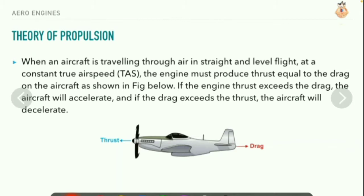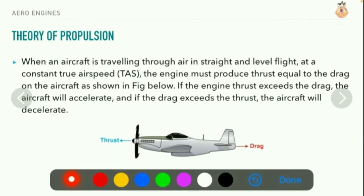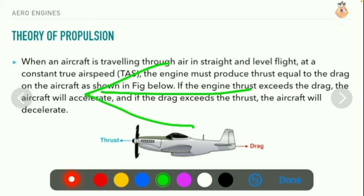If the engine thrust exceeds the drag, the aircraft will accelerate, and if the drag exceeds the thrust, the aircraft will decelerate. Thrust acts in the propagating direction and drag in the opposite direction. So the propulsion system must provide thrust greater than drag in order to accelerate the aircraft forward.